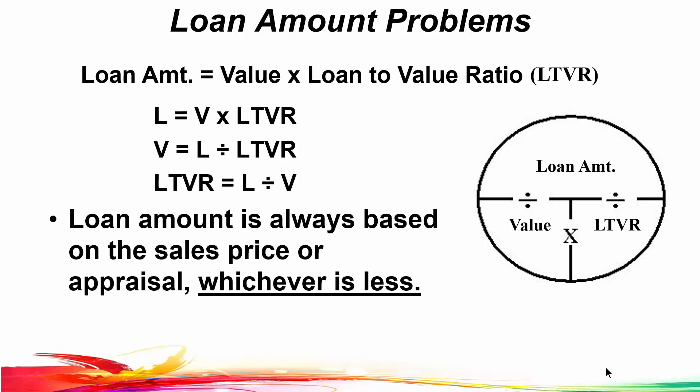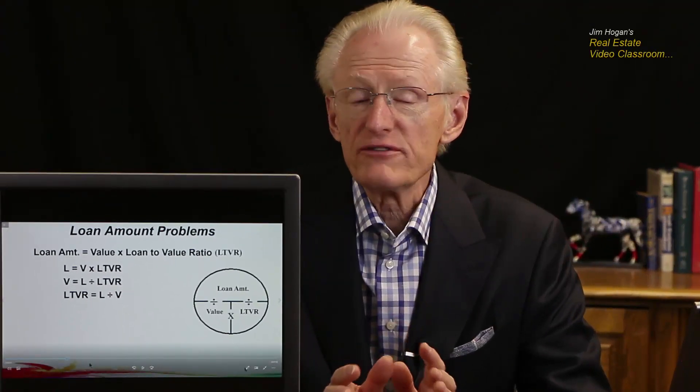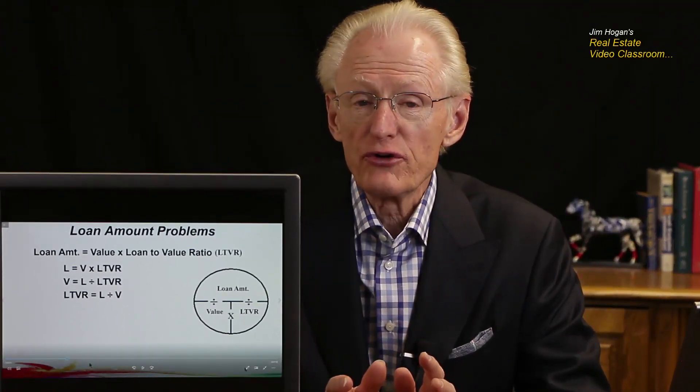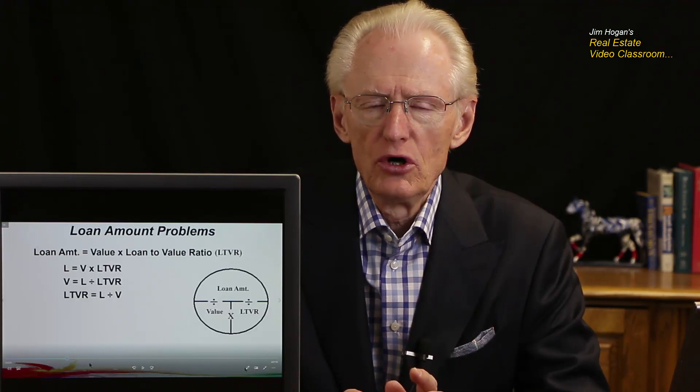Keep in mind the loan amount is always based on the sales price or appraised value, whichever is less — and we'll see a problem like this in just a minute. This loan-to-value ratio is the percentage of the sales price or appraised value that the lender will loan. So a loan-to-value ratio is a loan-to-value percentage.